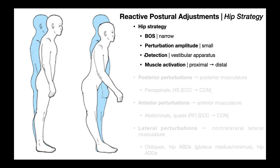The detection of that shift of center of gravity is through the vestibular apparatus, which is different from the ankle strategy. The change in center of gravity in the ankle strategy was detected through ankle proprioceptors — whether the ankle was going into more dorsiflexion or into more plantarflexion. Here it's the vestibular apparatus.